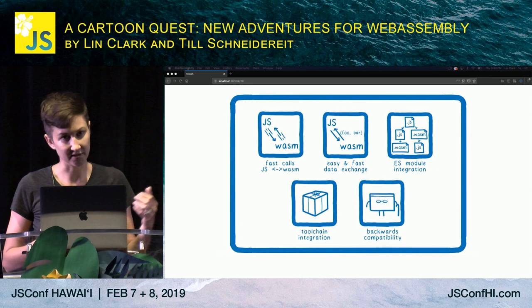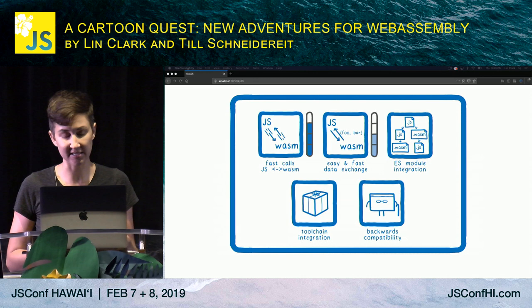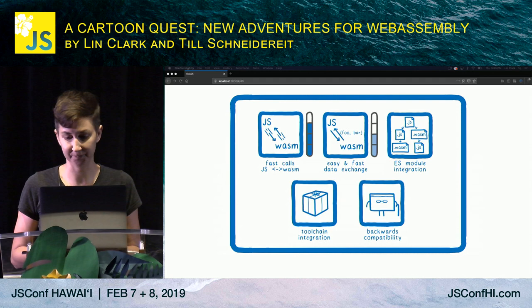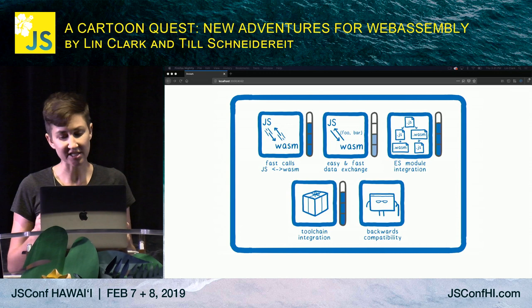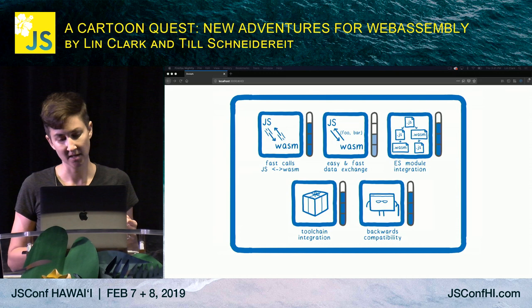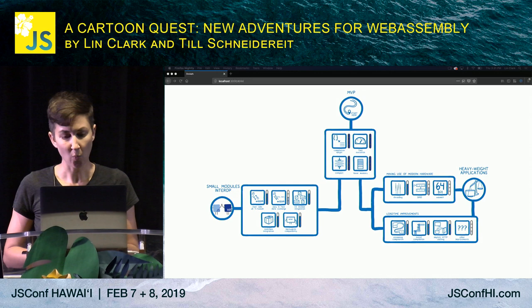Where are we on all of these things? Calls between JavaScript and WebAssembly are fast in Firefox now, and other browsers are also prioritizing this. For easy and fast data exchange, there are proposals that will help — such as any ref, host bindings, and weak refs. In the meantime, the Rust ecosystem has created tools that automate handling of this for you. For ES module integration, the proposal is pretty far along. For toolchain support, tools in the Rust ecosystem can package your code for NPM, and bundlers are actively working on support. For backwards compatibility, there's the wasm2js tool, which takes a wasm file and spits out equivalent JavaScript — it won't be fast, but it will work in older browsers.